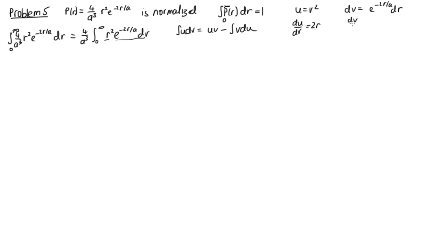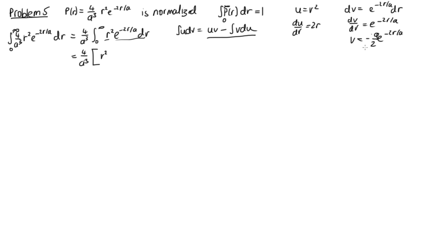We need du/dr = 2r, so du = 2r dr. For v, we integrate dv/dr = e^(−2r/a) to get v = −(a/2) e^(−2r/a), since differentiating this returns the original expression. Applying integration by parts gives (4/a³) × [uv − ∫v du] = (4/a³) × [r² × (−a/2)e^(−2r/a) − ∫(−a/2)e^(−2r/a) × 2r dr].